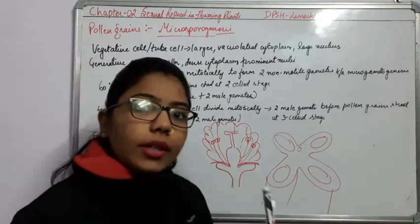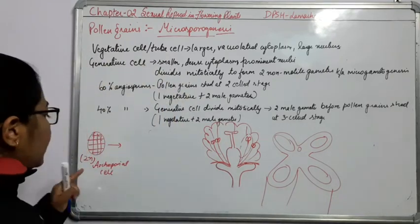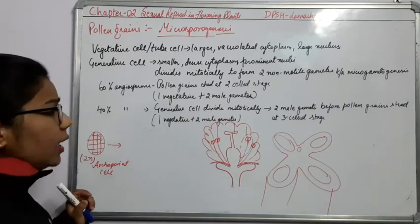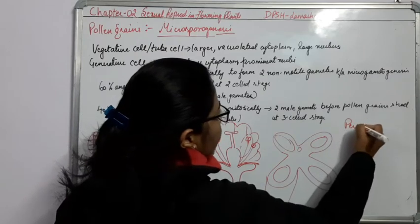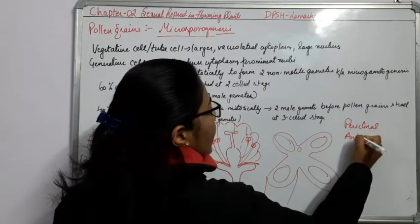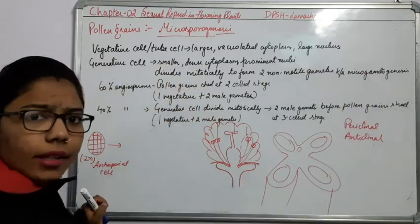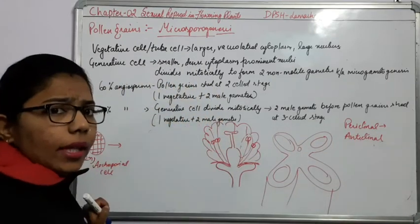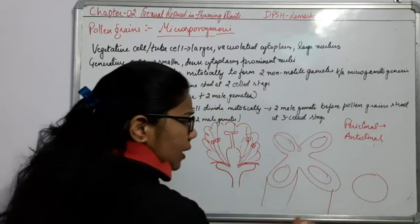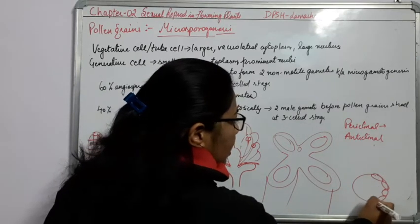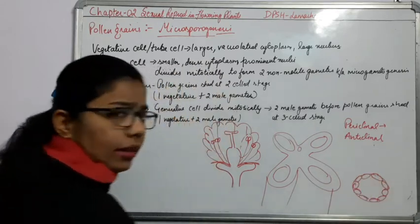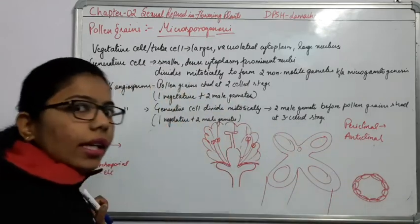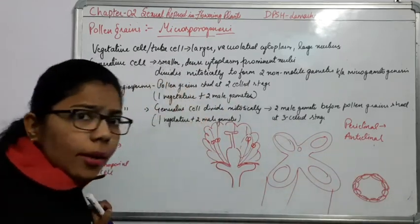What are the different stages? These are the archesporeal cells. Now there may be two types of division: periclinal division and anticlinal division. Periclinal division means when the division takes place at the layers — from one layer it forms two layers. Anticlinal division is just at 90 degrees — when the division will take place at a 90-degree angle.